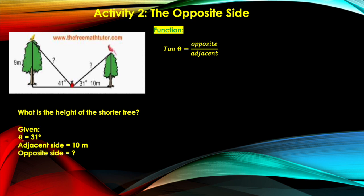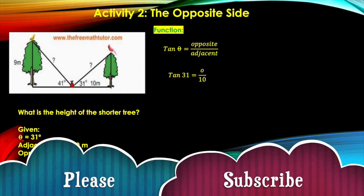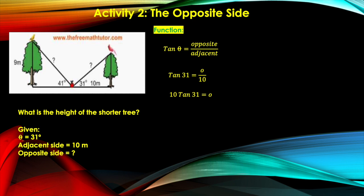So now the next thing we're going to do is substitute the given information to the function that we have decided to use. So tangent theta would be tangent 31 because theta is 31 degrees. And then let me use the smaller o to represent the variable of the opposite side, and the adjacent side is given at 10 meters. All right, so we're done with substitution. Now let's start doing the math here by cross multiplication. The next line would look like: 10 tangent 31 equals o or the opposite side.